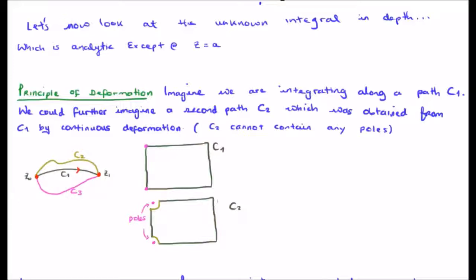We could imagine an infinite number of other paths which are gotten from the path c1 by deforming it. You could imagine c2 or c3 or whatever. The point here is that the principle of deformation allows us to essentially move or adjust our curve and still get the same answer.